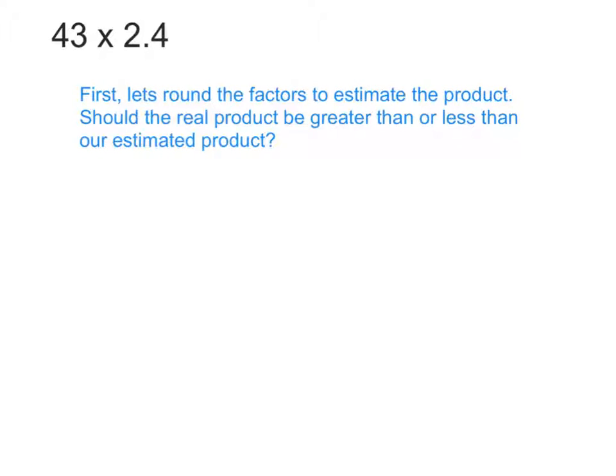Okay. You should have 43 times 2.4 written down. Let's first round the factors to estimate the product. So we can say that 43 is pretty close to what whole number? Or pretty close to what number? Roni? Forty. And did we round that number up or down? Down. Yeah, we made it smaller. So we can say that 43 is pretty close to 40. And we rounded it down. What about the second factor? 2.4. We could say that that is pretty close to what number? Lockshin? Two. And did we round that number up or down? Down.